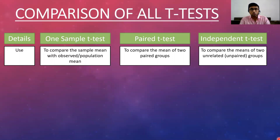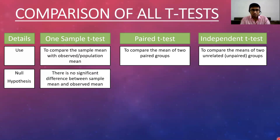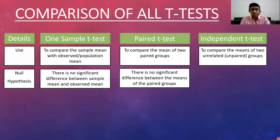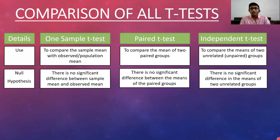For example, the consumption expenditure of rural and urban people, or the income of graduate and postgraduate students — these two groups are completely independent of each other, which is why this test is called the independent samples T-test. The null hypothesis for the one sample T-test is that there is no significant difference between the sample mean and the observed mean. For the paired T-test, there is no significant difference between the means of the paired groups. For the independent T-test, there is no significant difference in the means of the two unrelated groups — all focused on means, since all T-tests compare means.